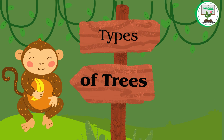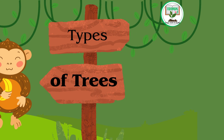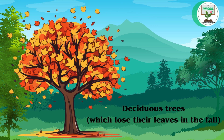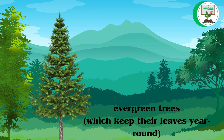Types of trees: trees are large woody plants with a single main trunk and branches. There are many different types of trees, including deciduous trees, which lose their leaves in the fall, and evergreen trees, which keep their leaves year round.